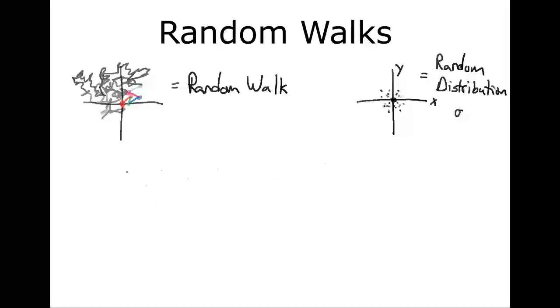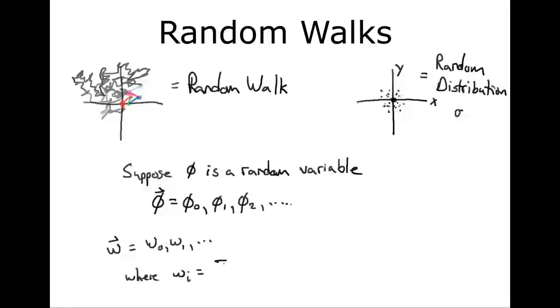If we call random numbers phi, then we could have a set or vector of random numbers, a first random number followed by a second random number, and so on. A random distribution is just the collection of these random variables phi, but a random walk is the sum of these random variables. If w describes our random walk, each wi is the sum from j equals 0 to i of phi j, which is to say w is the cumulative sum over a random variable.